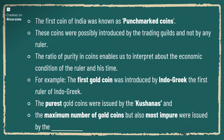The first coin of India was known as punch-marked coins. They are called punch-marked because a ruler's face, a god's face, an animal, or a particular symbol was punched onto the coin as a stamp marking.